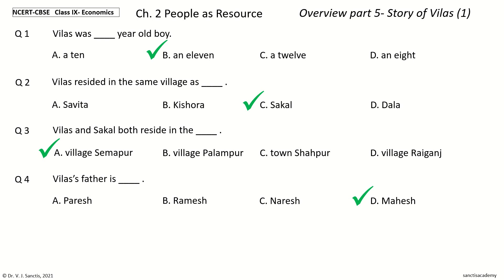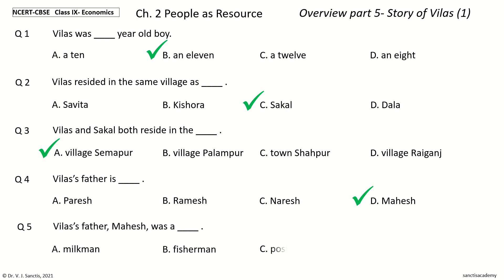Question 5: Vilas's father Mahesh was a dash. The options are: a) Milkman, b) Fisherman, c) Postman, d) Tradesman. Your time to choose.